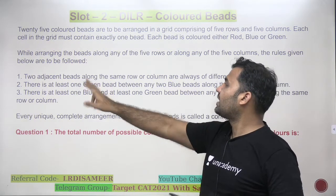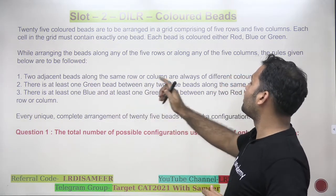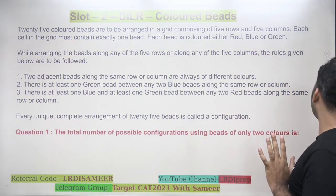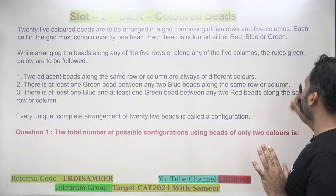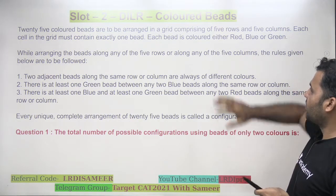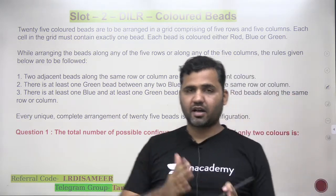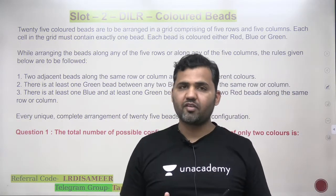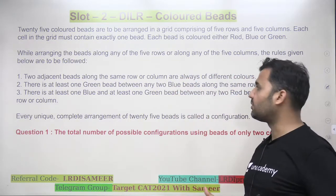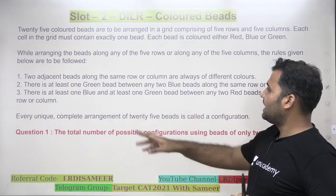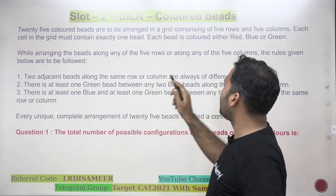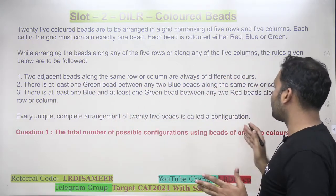What are those rules? Rule 1: two adjacent beads along the same row or column are always of different colors. So by this time you should get an idea that you are supposed to arrange three colored beads — red, green, and blue — in a 5x5 matrix with these three conditions. No two adjacent cells should have beads of the same color.